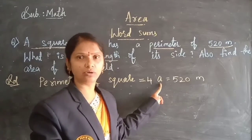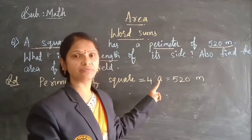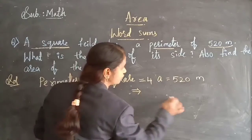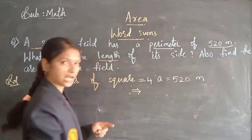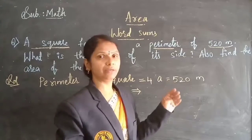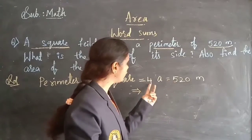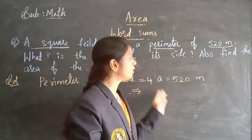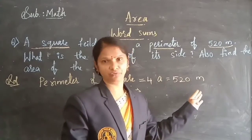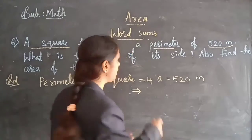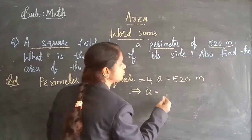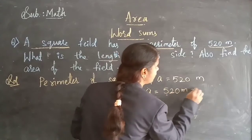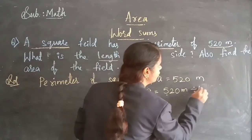A is nothing but the side — the length of the side. If I am shifting the 4 to the other side, it will be divided. Because 4A means 4 into A, and whenever we shift a multiplication number to the other side, it becomes division. So A equals 520 meters divided by 4.